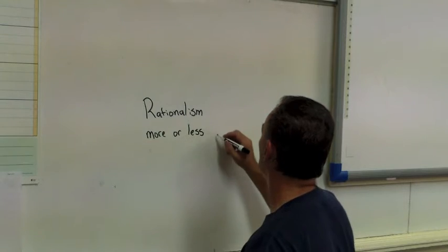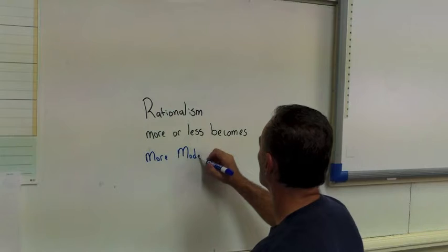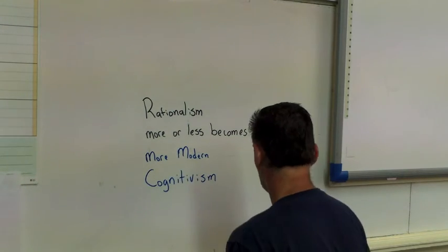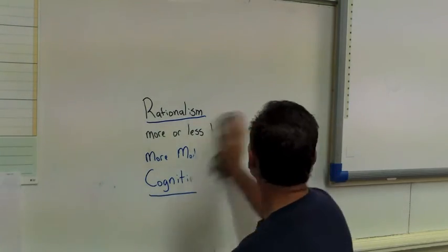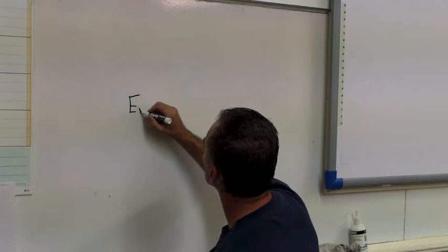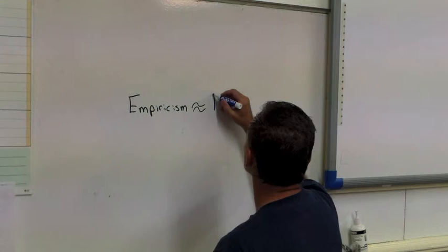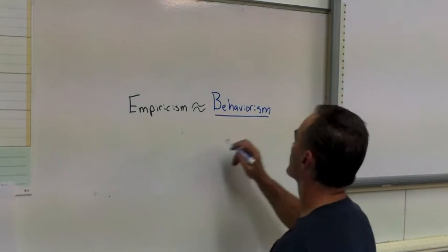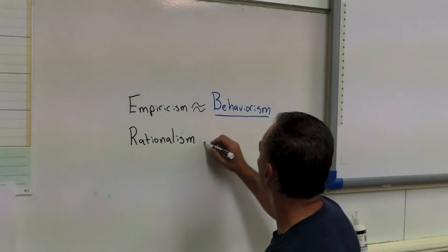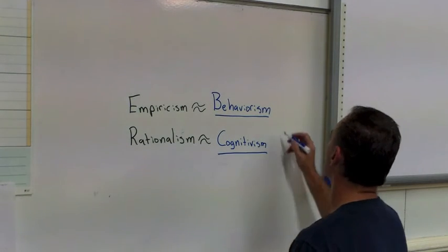Rationalism in the 1950s then moves and morphs into the more modern philosophy of cognitivism, more or less, as an option. Getting back to Aristotle and his theory or ideas of empiricism, those ideas more or less became the more modern behaviorism. Plato's thoughts and philosophy of rationalism more or less again became cognitivism.